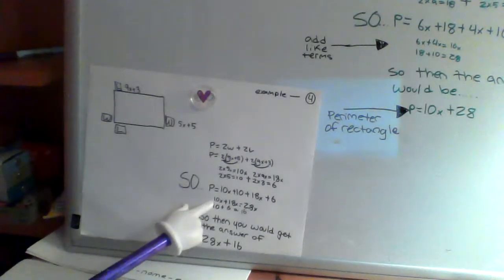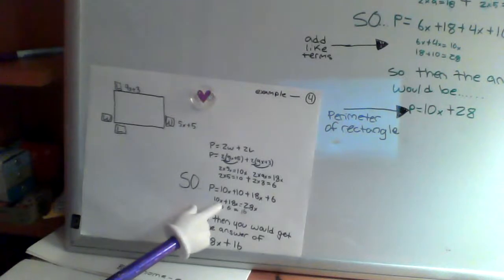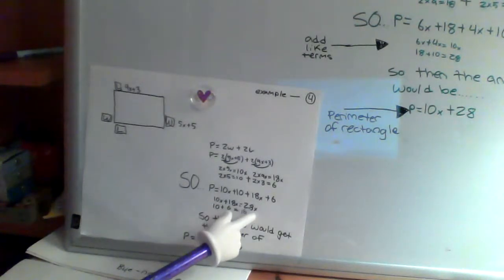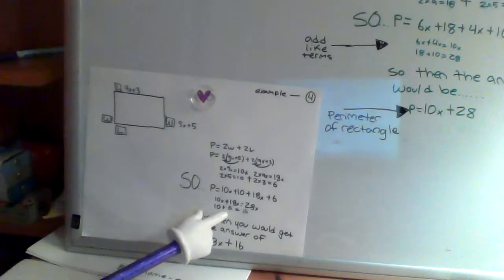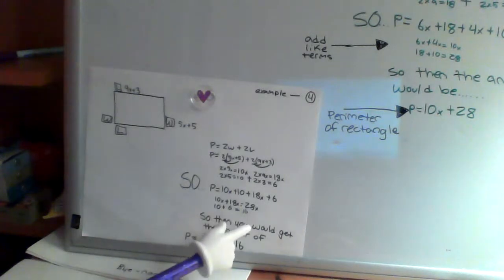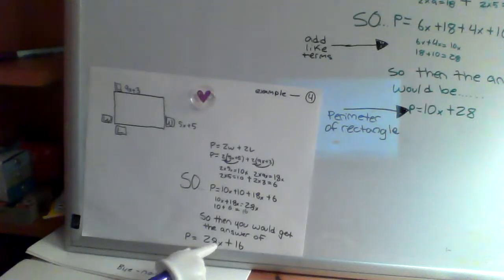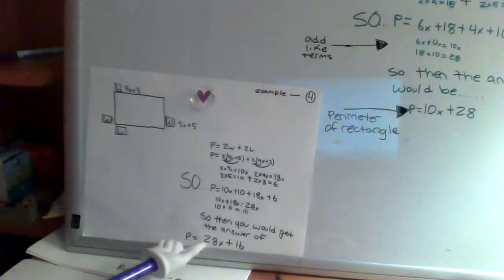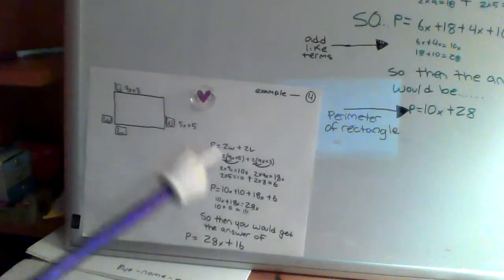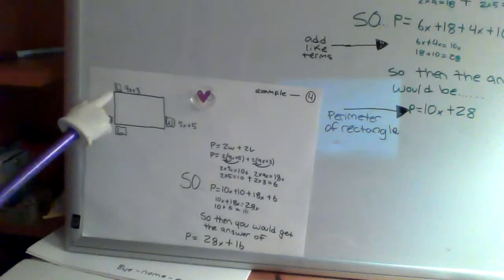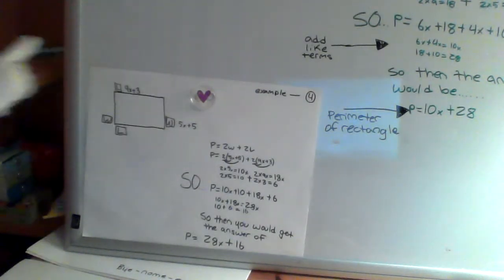Then you'd have to simplify. So 10X plus 18X equals 28X. And then 10 plus 6 equals 16. So then you would get the answer of P equals 28X plus 16, which would be the perimeter of this rectangle right here.